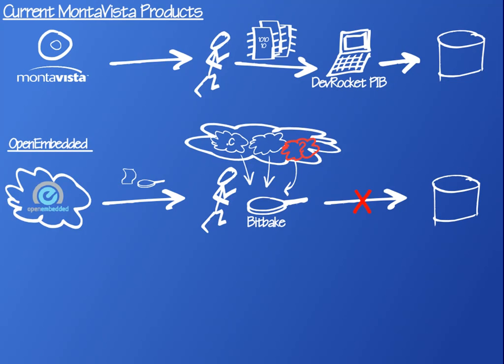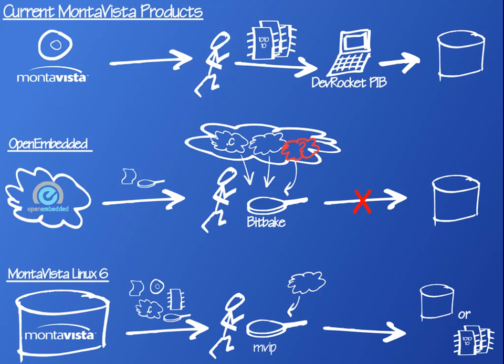However, we know things change. Merchants move their carts and even begin to offer different ingredients, just like open source software. New code is introduced into your meal, for which you are using old recipes to cook with. It just won't work as you'd expect.